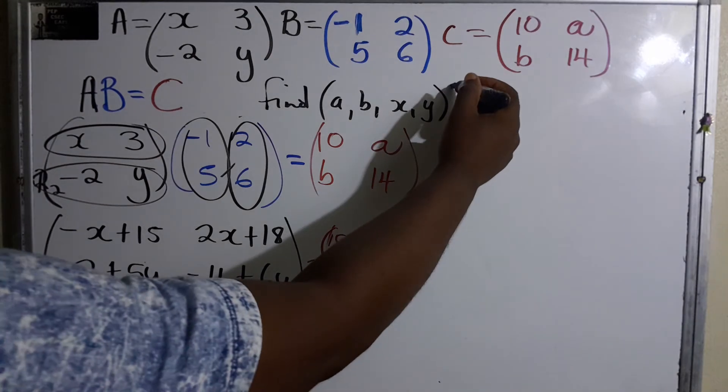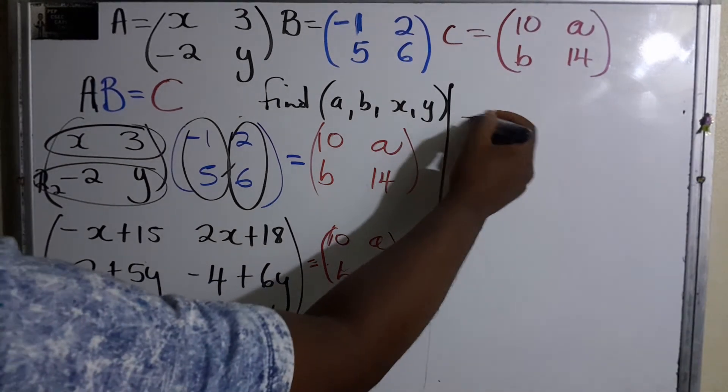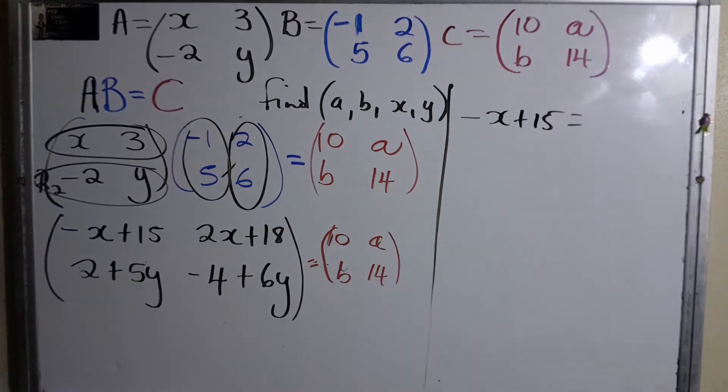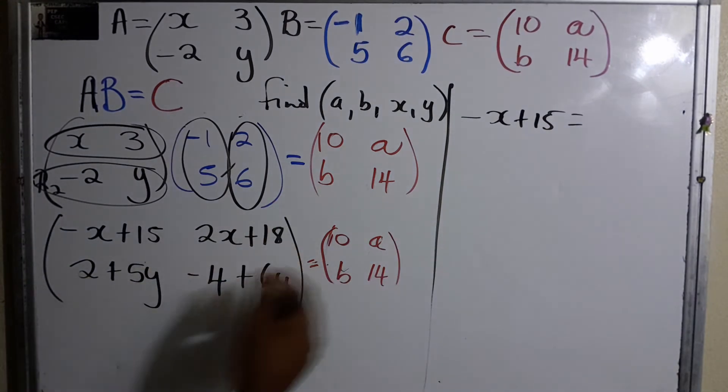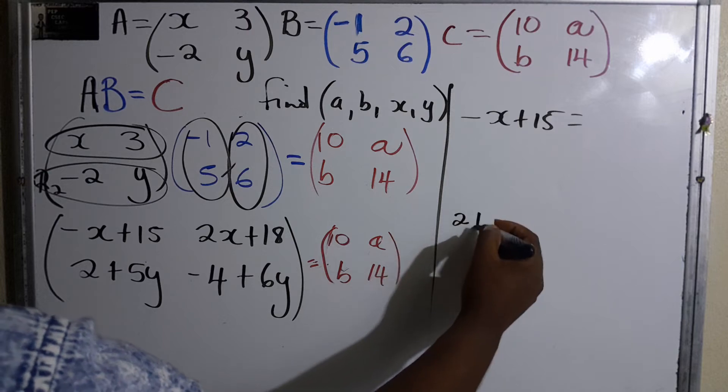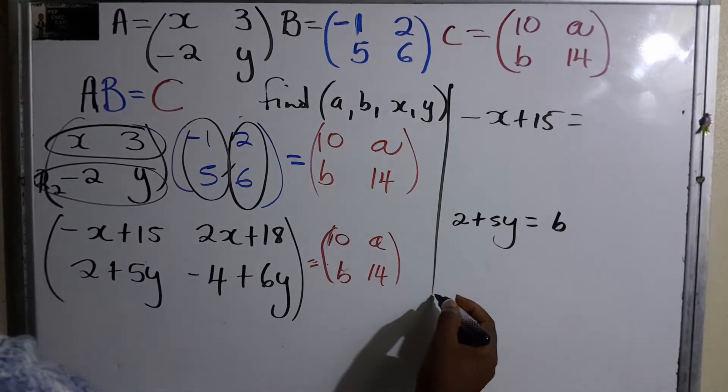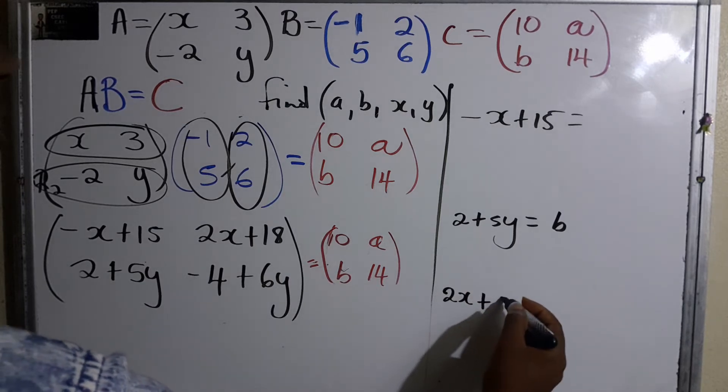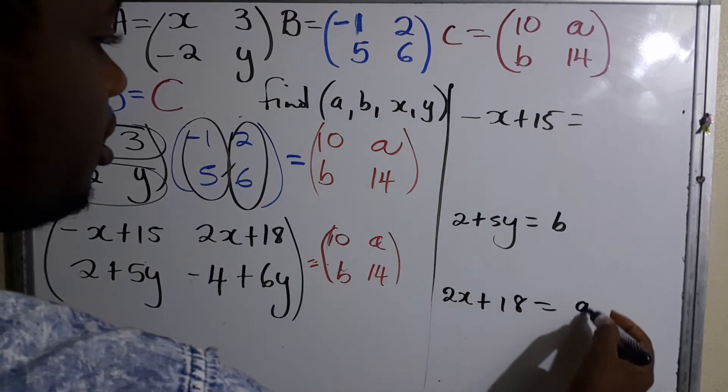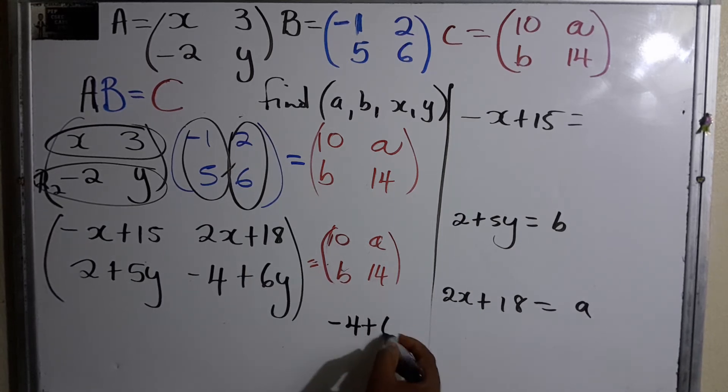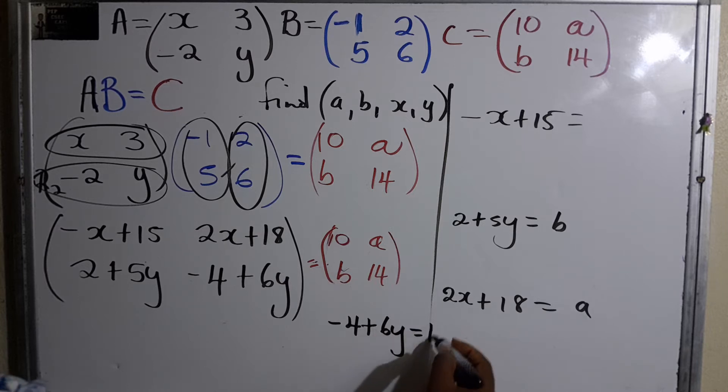So let's write it up: we have -x plus 15, and that must equal to 10. I'm writing all these first: 2 plus 5y equals b. 2x plus 18 equals a. And the final one: -4 plus 6y equals 14.